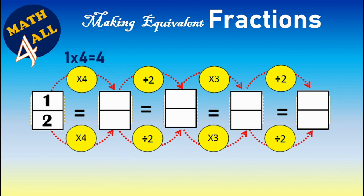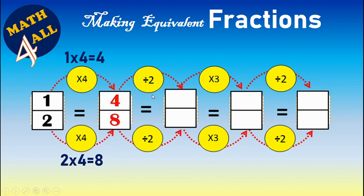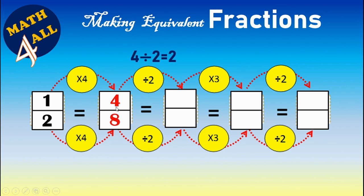Let's start: one times four equals four, two times four equals eight. Now to make more equivalent fractions, we can also reduce a big fraction using division. Whatever you do to the top you must do to the bottom. I will divide by two: four divided by two equals two, and eight divided by two equals four.